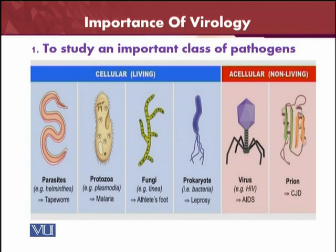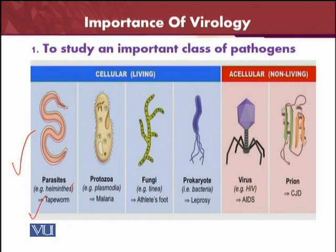Starting with the biggest microorganisms: parasites, such as helminths. There are many kinds of parasites, but most importantly three of them — roundworms, flatworms, and tapeworms like Ascaris. Then there is protozoa, which is also a type of parasite. The most famous disease caused by protozoa is malaria. Protozoa are present in the blood of the host and cause disease.